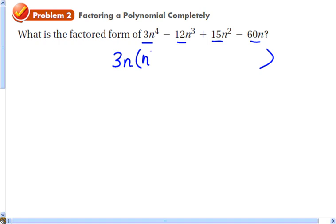3n times n³ is 3n⁴. 3n times 4n² is 12n³. 3n times 5n is 15n². And 3n times 20 is 60n. Now we're going to try and factor it by grouping those two separately from those two.